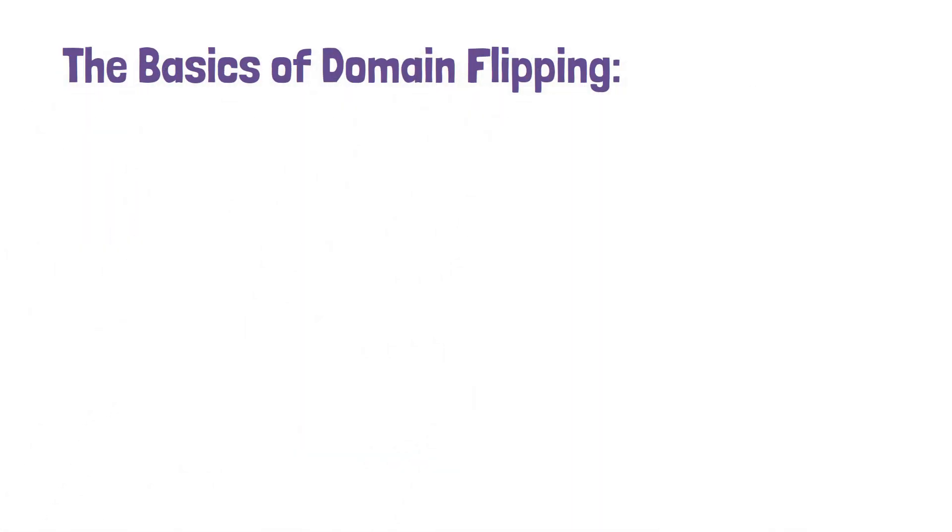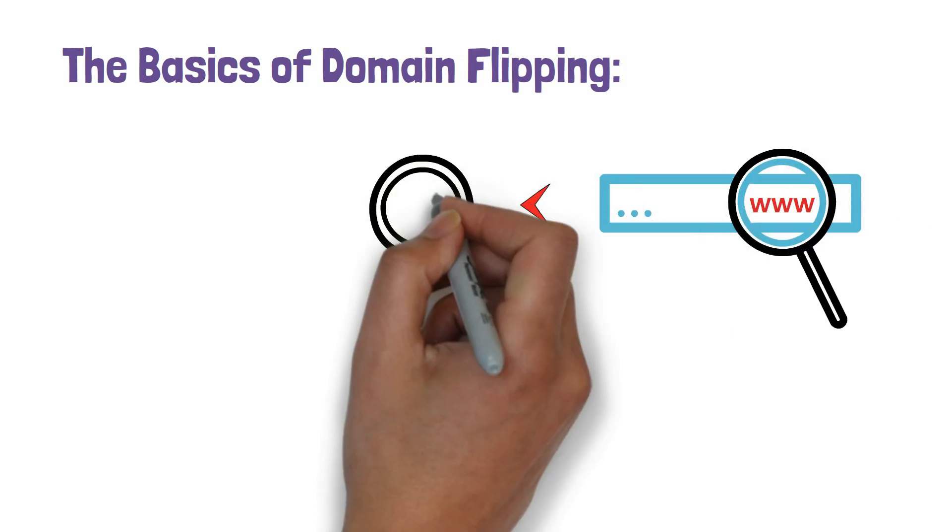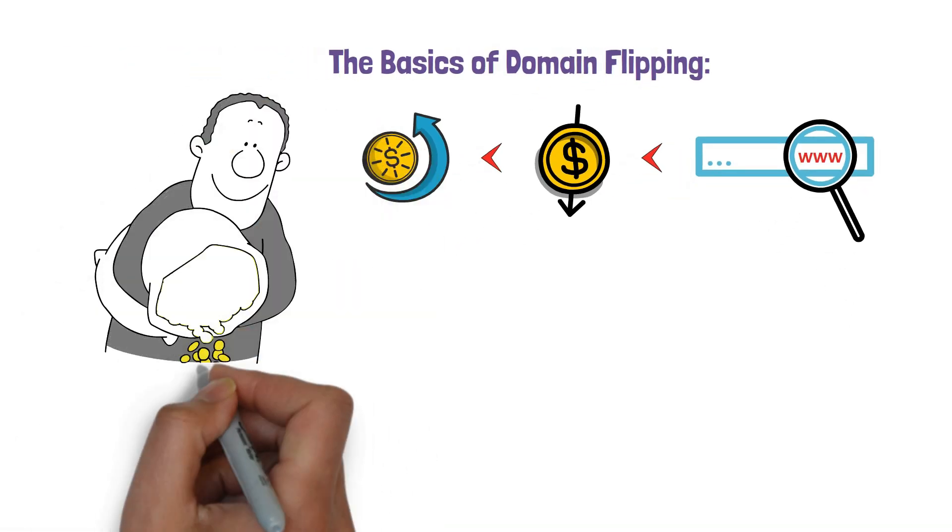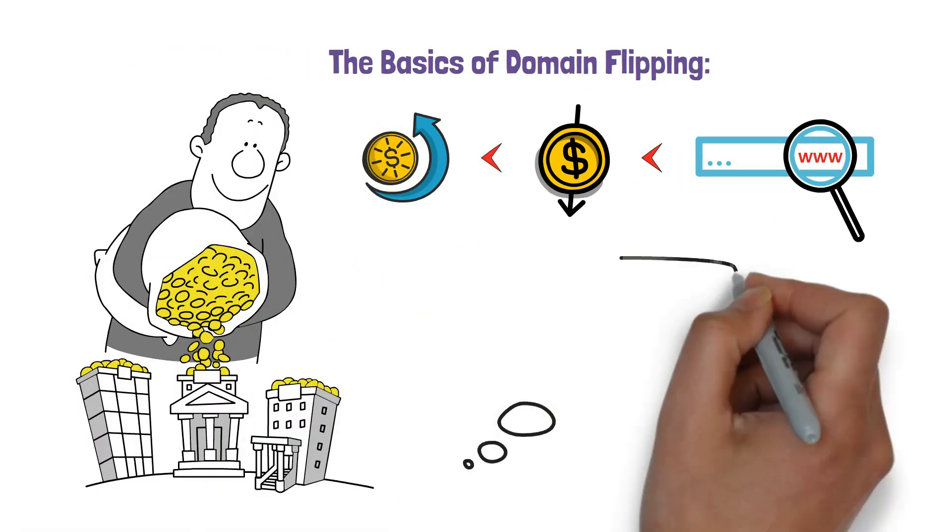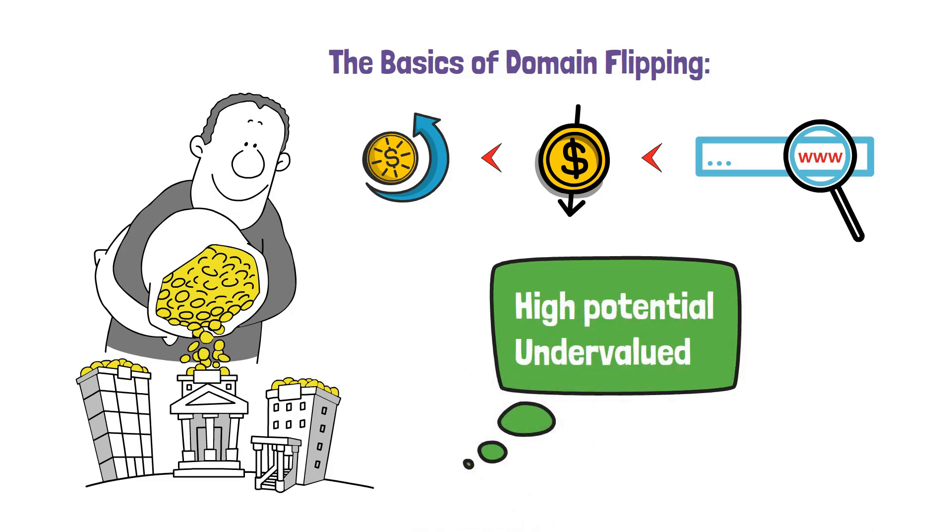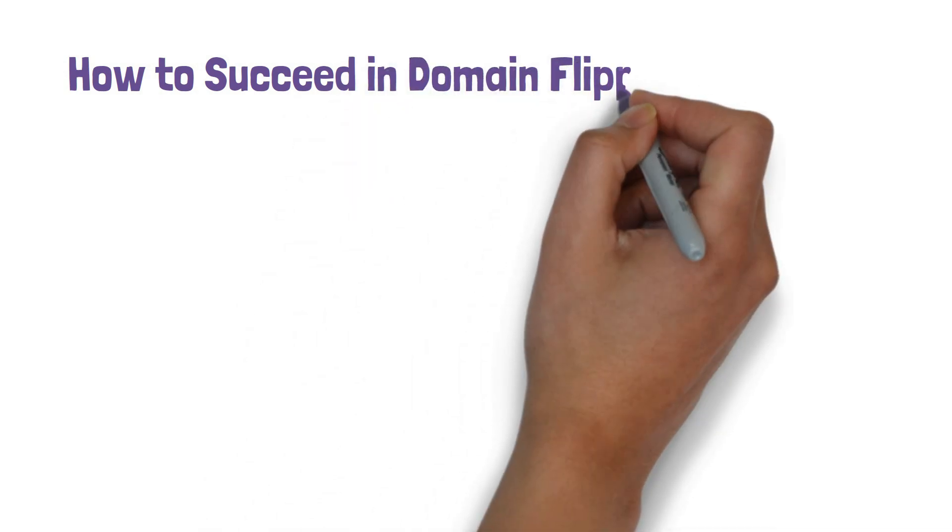The basics of domain flipping: Domain flipping involves buying domains at a lower price and selling them at a higher price. It's like real estate investment but in the digital world. The trick is to spot domain names that have high potential or are undervalued.